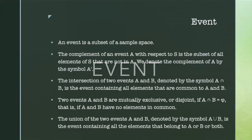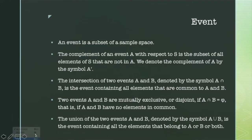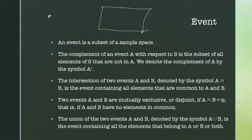In event and sample space, we can summarize these key points. First, an event is a subset of the sample space. Second, the complement of an event A with respect to S is the subset of all elements of S that are not in A. We denote the complement of A by the symbol A'. Considering sample space S and event A, whatever is outside A is considered the complement of A.